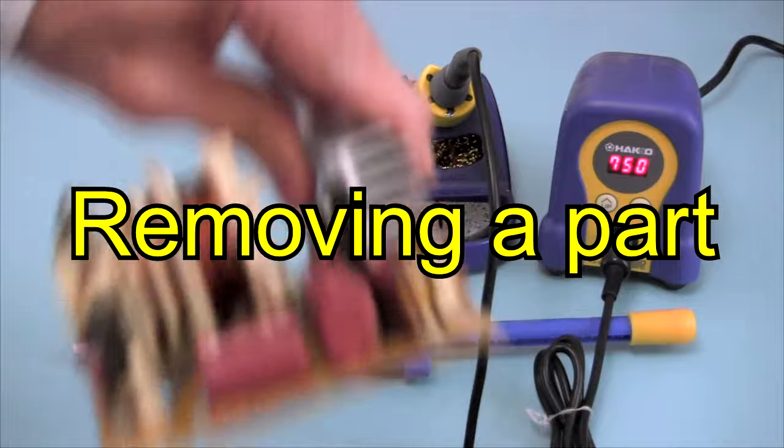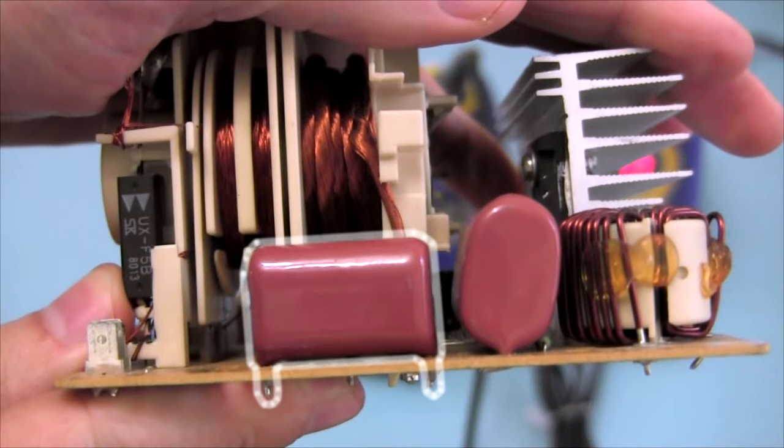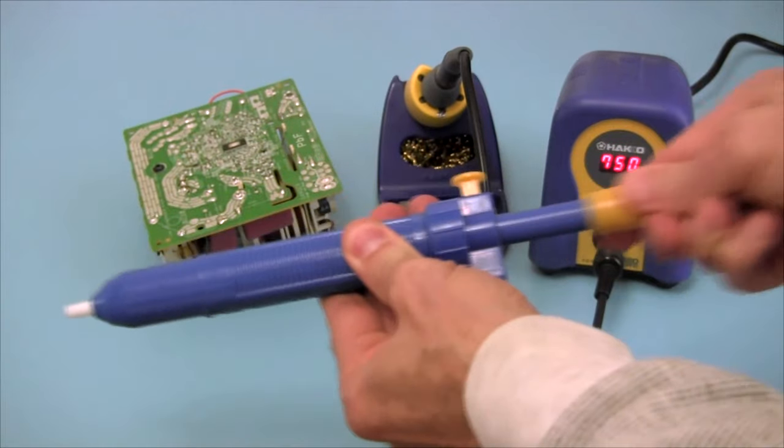Here's how to use a desoldering pump to remove a part. In this case a capacitor. First push in the piston until it locks.